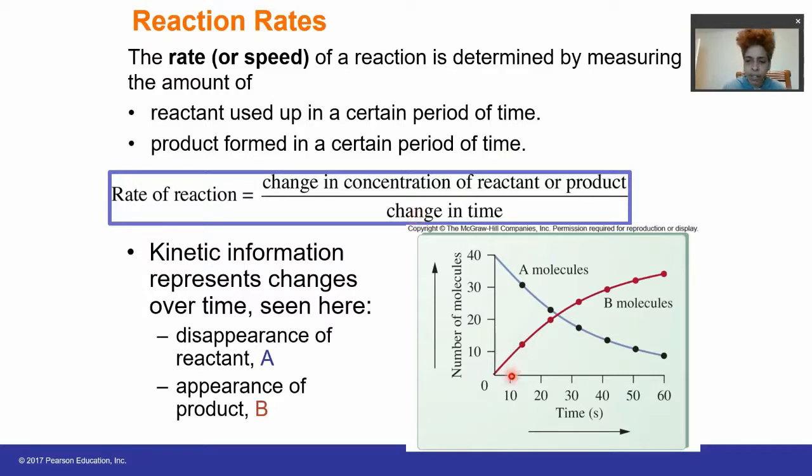Notice that in the first 10 minutes of this reaction, we have mainly reactant particles and very few product particles. As a matter of fact, at time zero, we have zero product and 40 molecules. As time goes on, we lose reactant molecules as product molecules form. So the rate is the disappearance of A over time or the appearance of B, our product, over time.